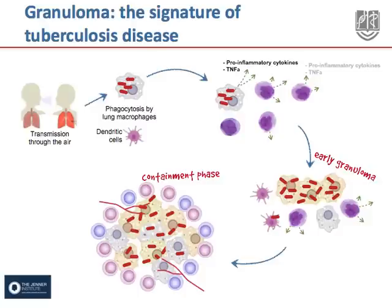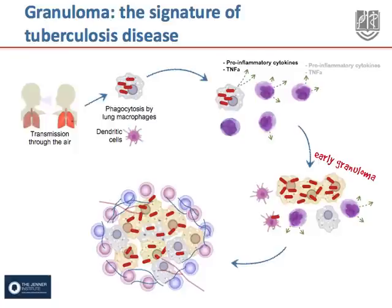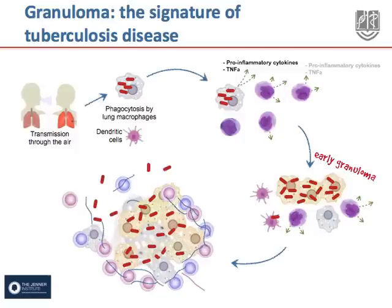Most individuals control TB at this stage — that is, they are latently infected and therefore not infectious. However, with granulomas associated with disease progression, the outside fibrous sheath becomes more prominent, the blood vessels penetrating the granuloma decrease, and there is an evident increase of foamy macrophages. The central part becomes more necrotic and caseous, and ultimately the granuloma ruptures, releasing thousands of bacilli into the airways.